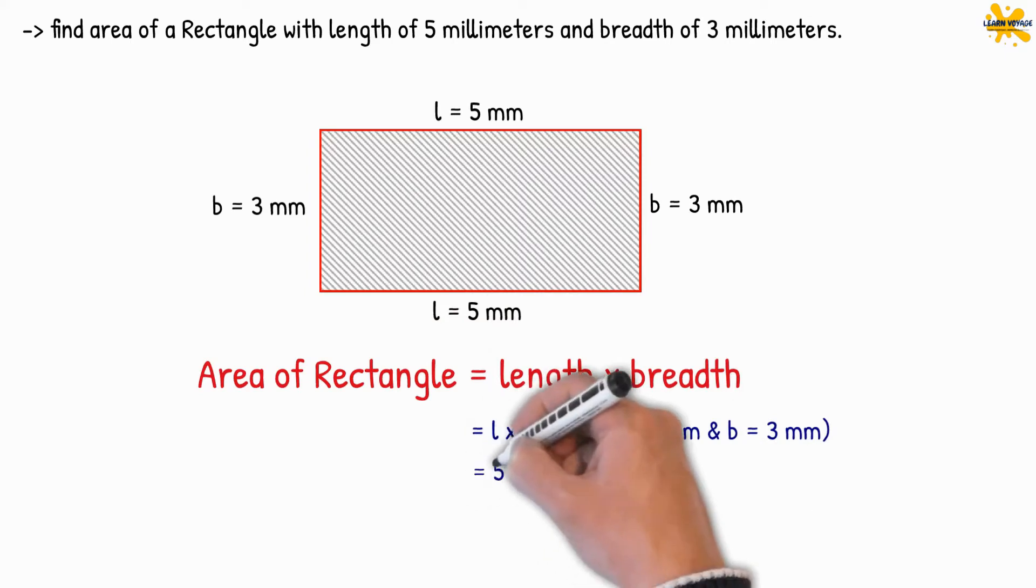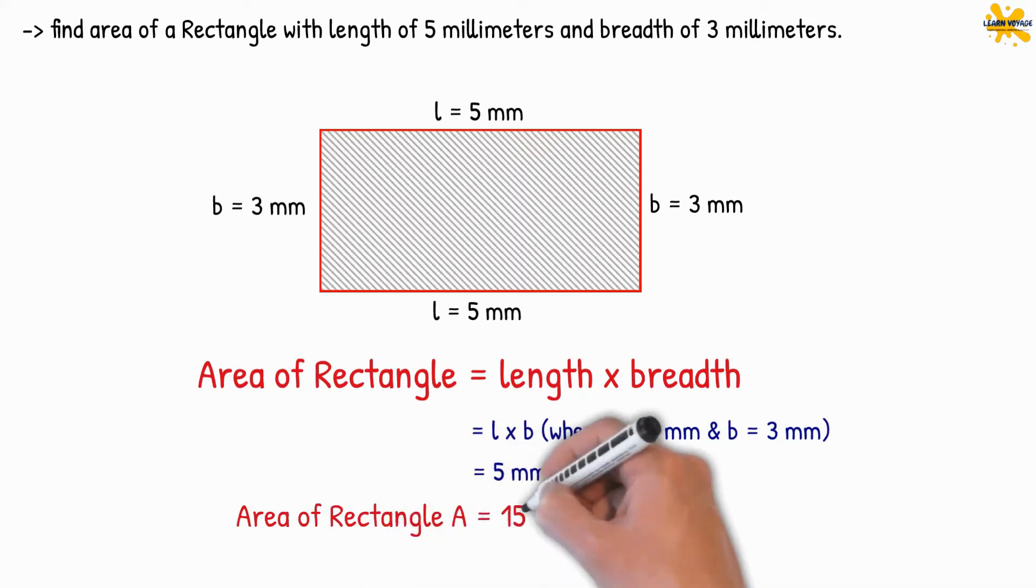Therefore, the area will be 5 mm into 3 mm. That equals to 15 square mm.